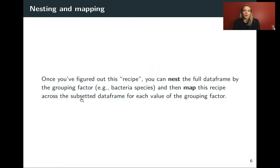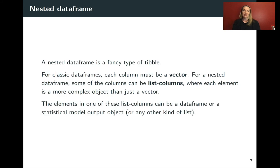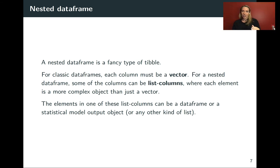By thinking through this with one little subset of the data, we've created a recipe we can then use when we nest. We're going to create a special type of tibble where one of the columns is called a list column. This nested data frame is a fancy type of tibble where one or more of the columns, instead of being a regular vector column, can store more in each cell value — more than a single value. These list columns let us do some really nice things with mapping that we'll explore in finishing up this chapter.